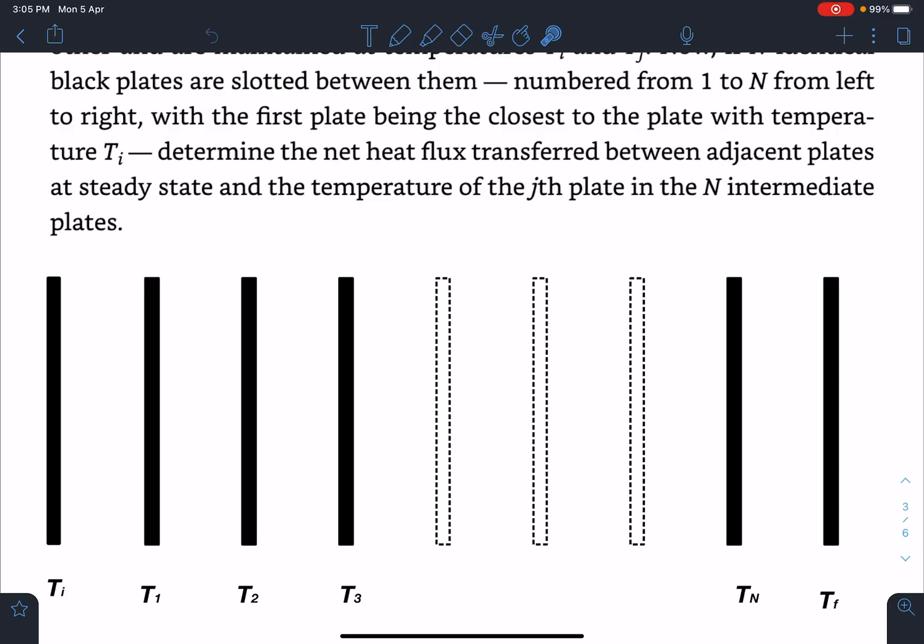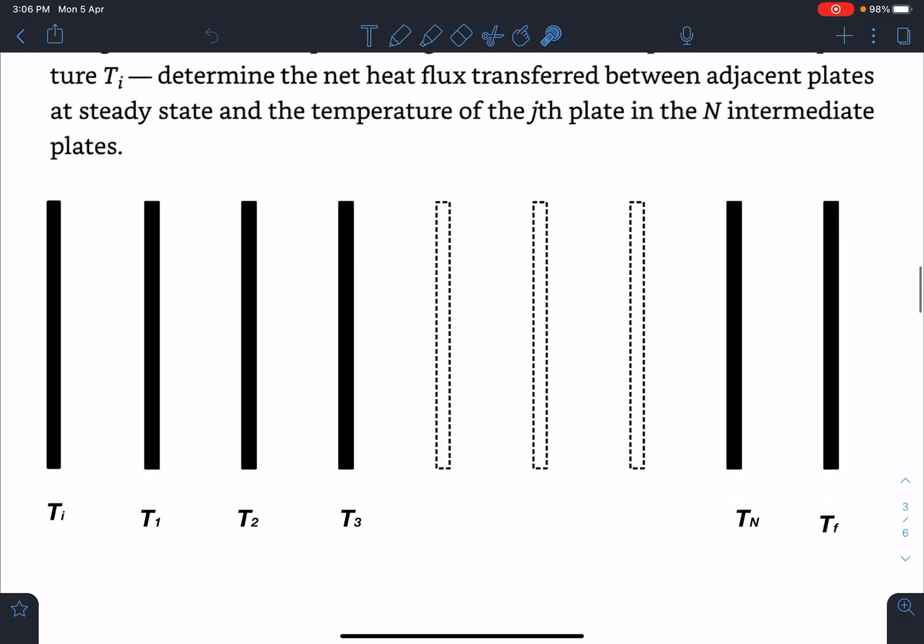They are asking: determine the net heat flux transferred between the adjacent plates at steady state and the temperature of Jth plate in the N intermediate plates. As you can see the diagram, there are two plates and in between there are N black plates placed here. Let's say in steady state their temperatures are T1, T2, T3 and so on up to Tn. So total there are N plus 2 number of plates.